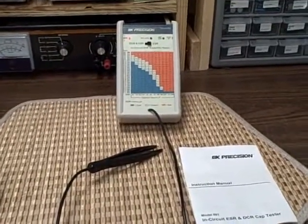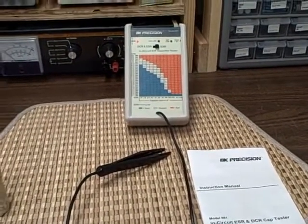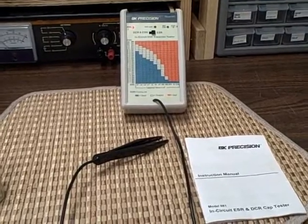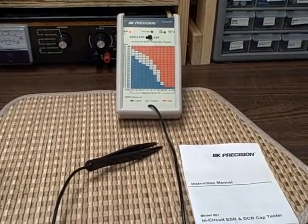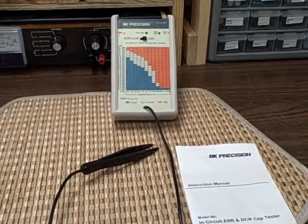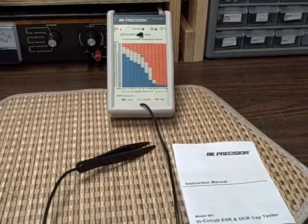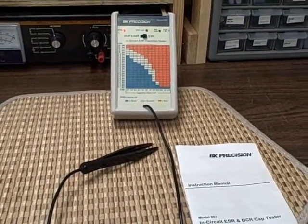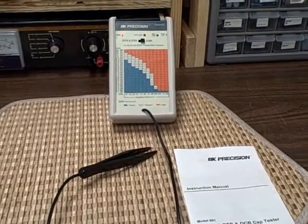Hi, I'm Bruce and welcome to my BAPtronics lab here in Colorado. Today I'm looking at a B&K Precision Model 881 ESR and DCR in-circuit capacitance tester.